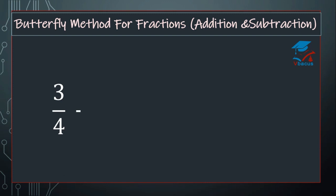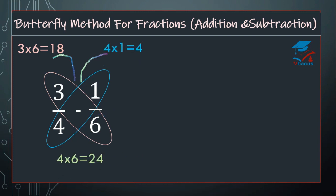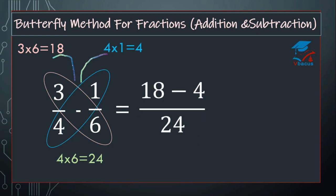3 over 4 minus 1 over 6. Here also you can apply the same method. Multiply 3 and 6, that will become 18. Multiply 4 and 1, that will become 4. Multiply the denominators, that will become 24. So subtract 4 from 18 and write the denominator: 18 minus 4.